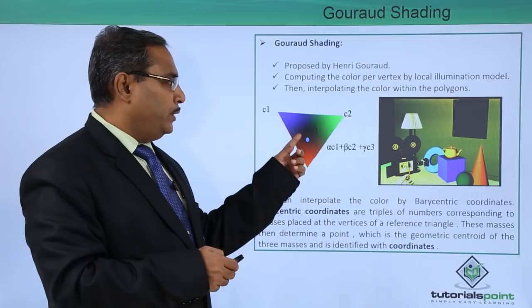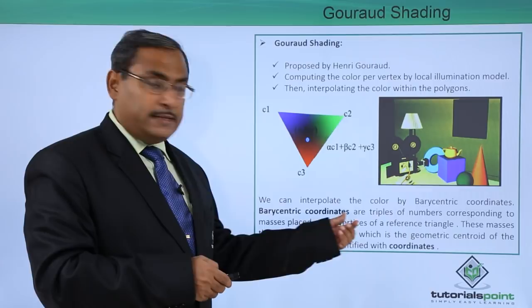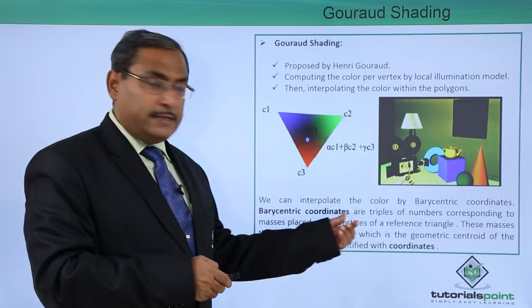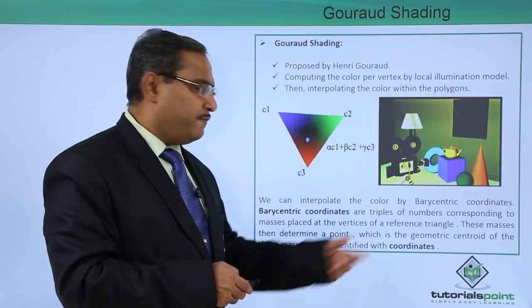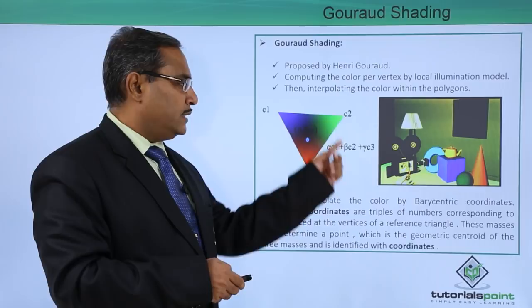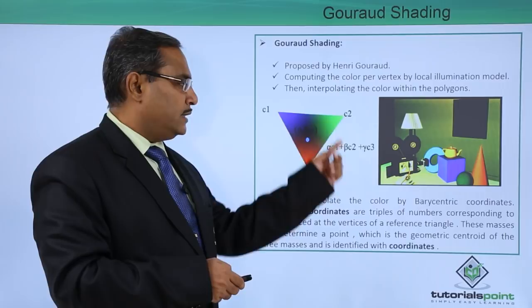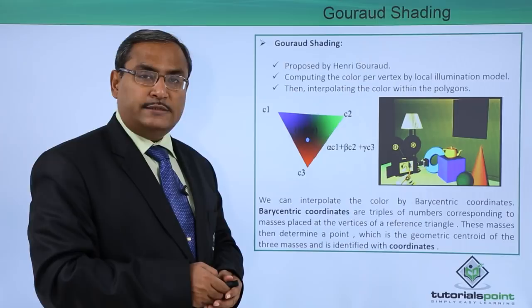Here is one diagram where we are considering a point with the barycentric coordinates alpha, beta, and gamma. We can interpolate the color using barycentric coordinates. Using the formula alpha*C1 + beta*C2 + gamma*C3, we calculate the value at this barycentric point, which has coordinates alpha, beta, gamma.